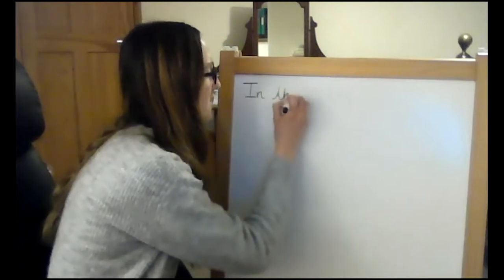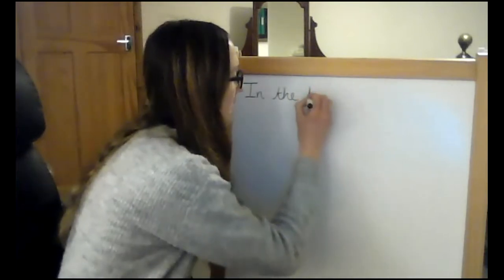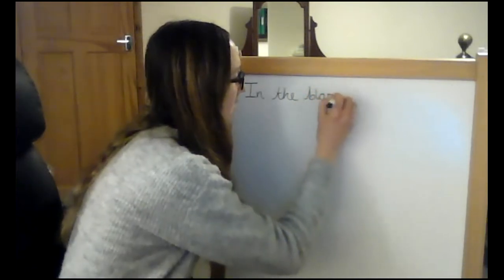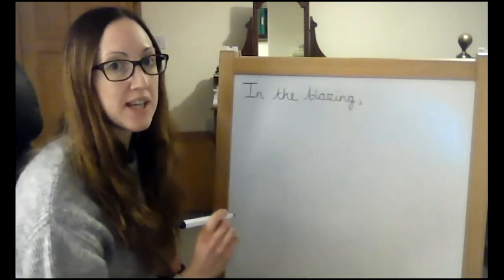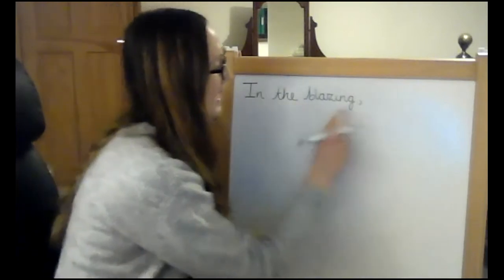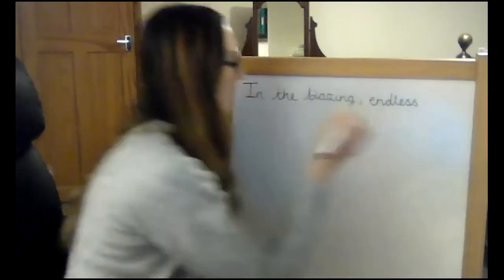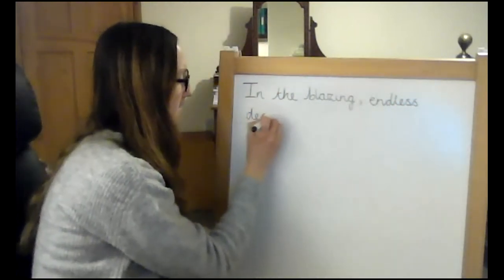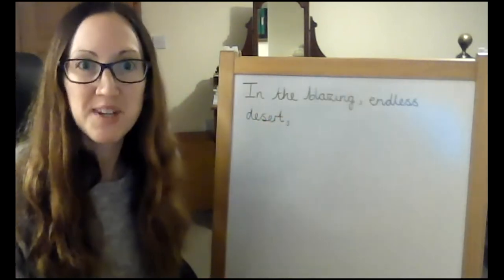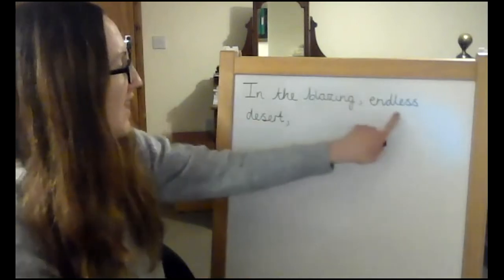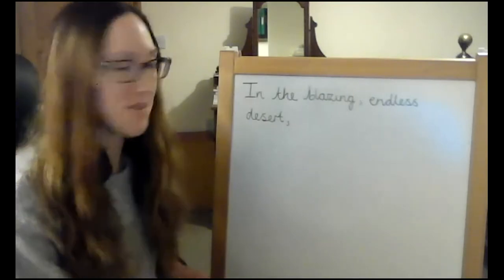I think I am going to go for 'in the blazing endless desert.' I'm writing the idea down as a starting point for my sentence. 'In the blazing' — I'm using two adjectives here, so I need a comma between them — 'in the blazing endless desert,' comma. I'm really pleased with that starting point because I've used some really cracking adjectives and I've also written an adverbial, so I've met my descriptive technique target.